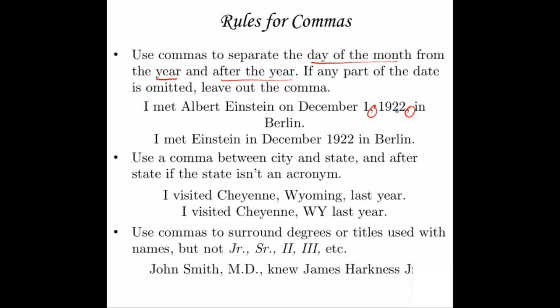Next, use a comma between city and state, and after the state if the sentence continues — unless the state is a postal abbreviation. So, "I visited Cheyenne, Wyoming, last year" — Cheyenne gets a comma and Wyoming gets a comma before we go on. But if we're using the postal abbreviation WY for Wyoming, you don't need a comma after the postal acronym. Is English crazy? Yes, it is.